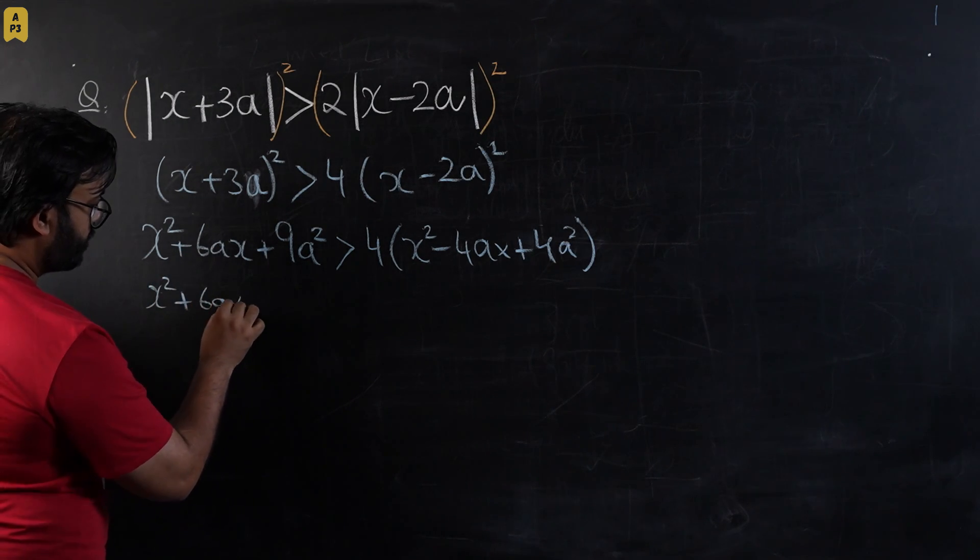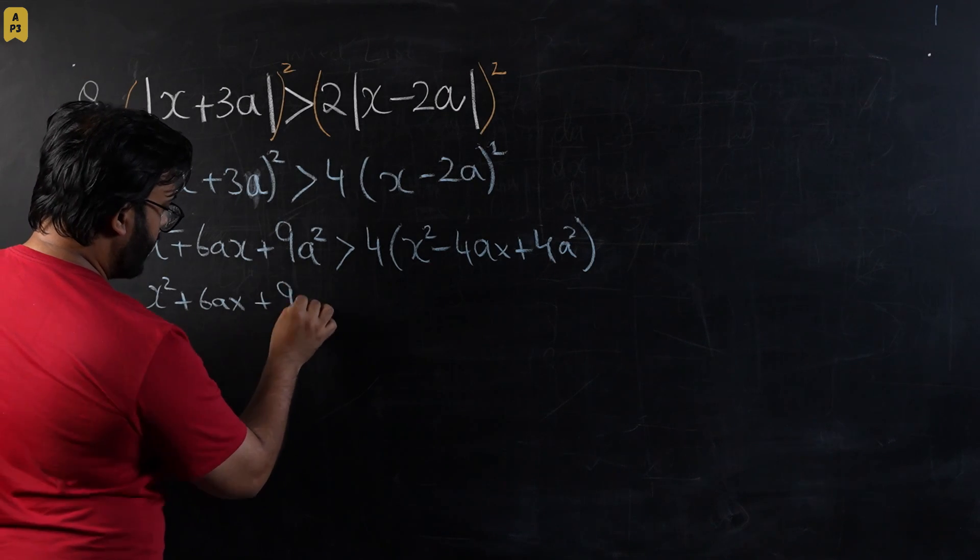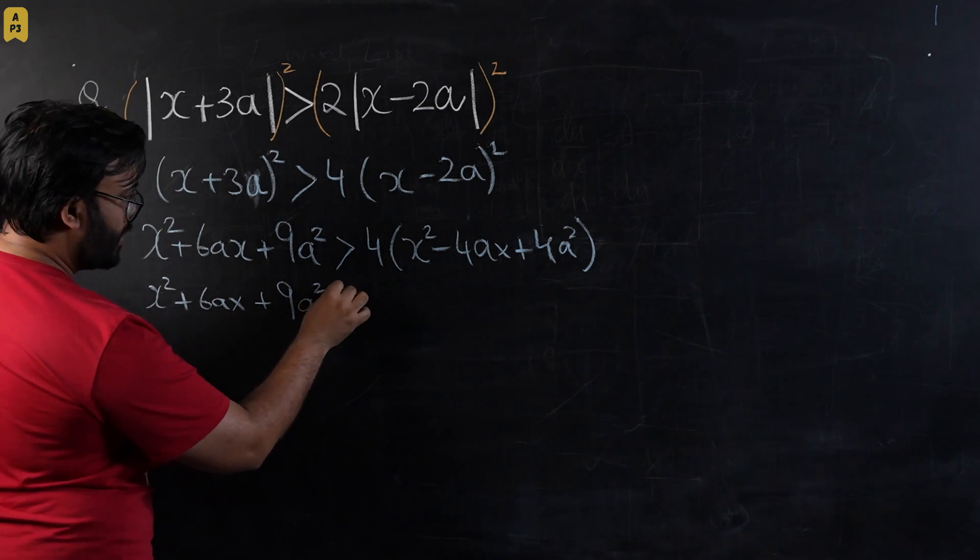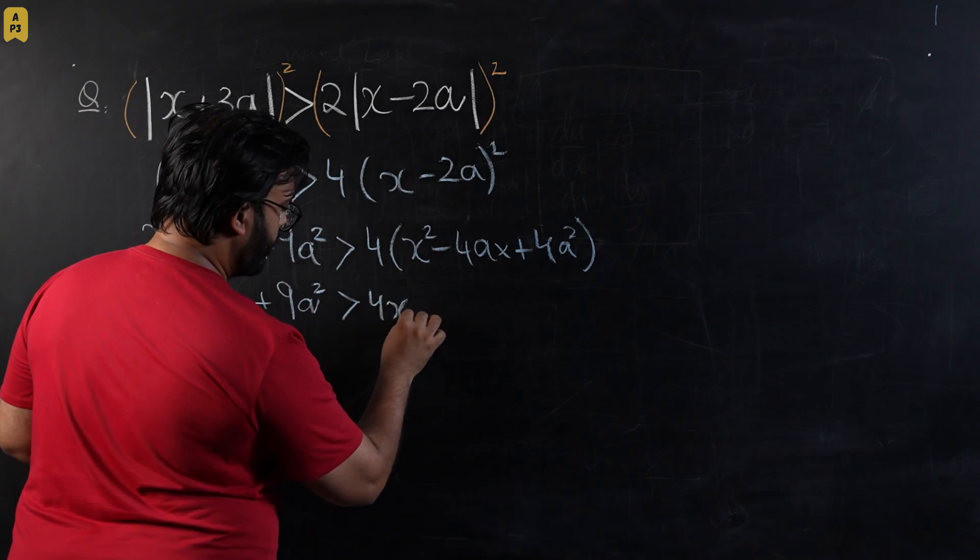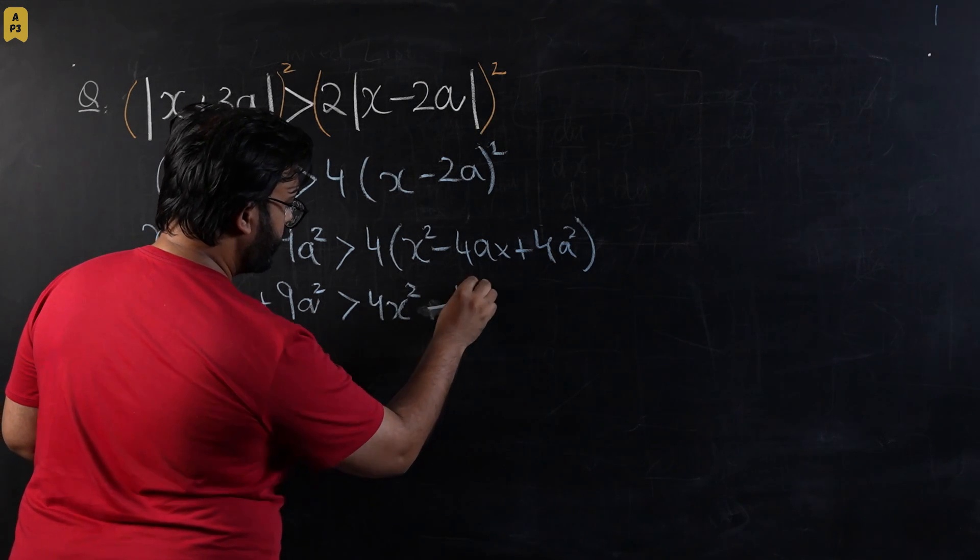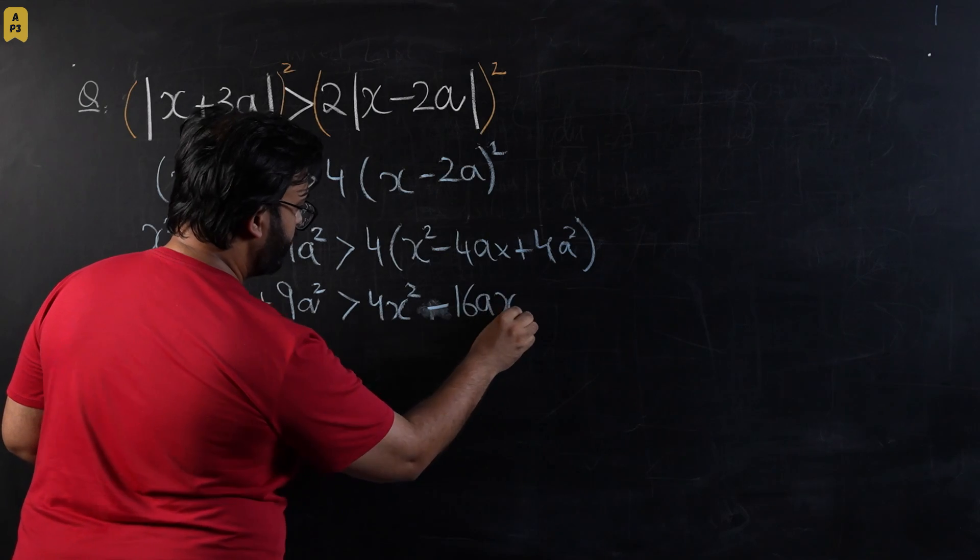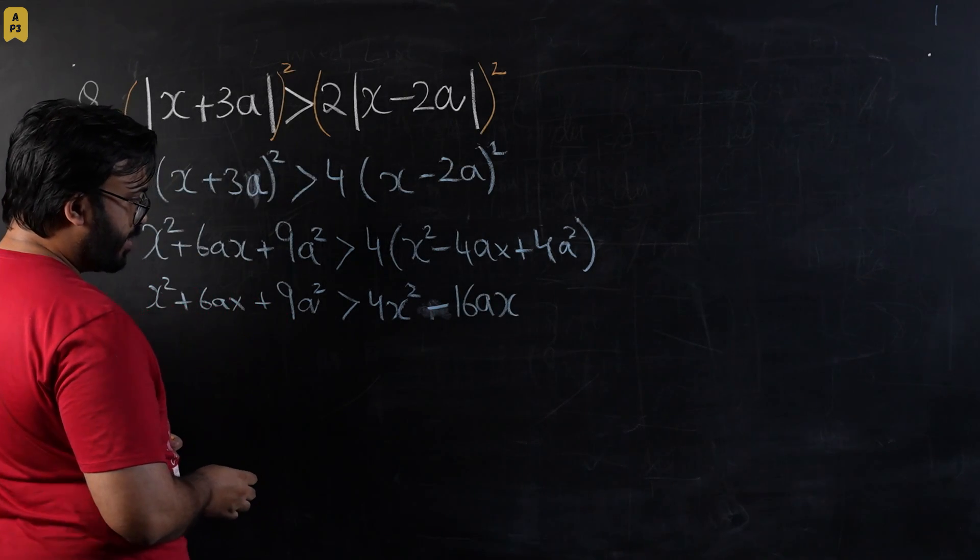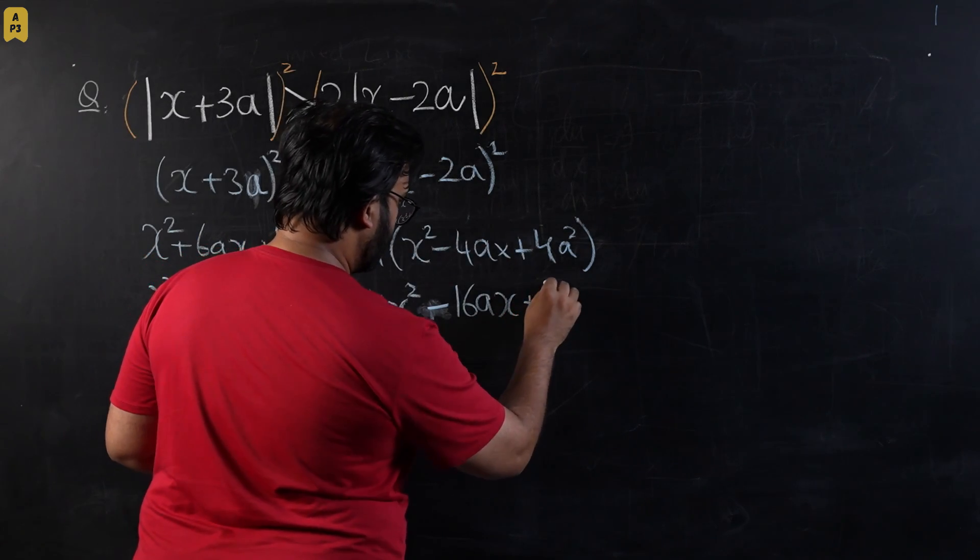This will become x² + 6ax + 9a² is greater than 4x² - 16ax, be careful about addition and subtraction errors, plus 16a².